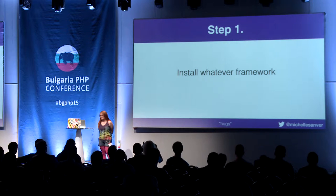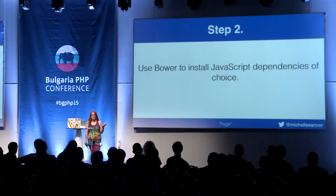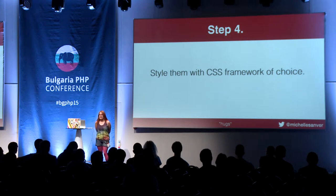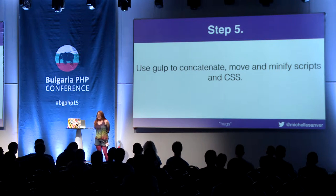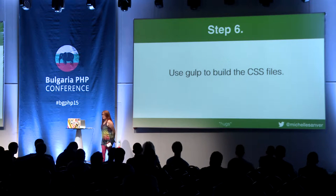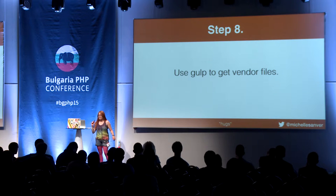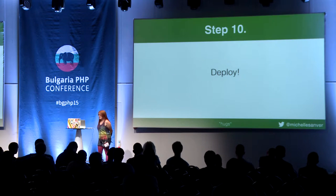So here are my ten steps to a great frontend workflow in your chosen PHP framework. Step one: install whatever framework. Step two: use Bower to install JavaScript dependencies of choice. Step three: make some views. Step four: style them with a CSS framework of choice. Step five: use Gulp to concatenate, move and minify. Step six: build the CSS files. Step seven: care about versioning. Step eight: get the vendor files. Step nine: set up a watch for fluid development. Step ten: deploy.